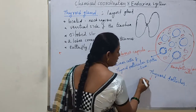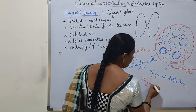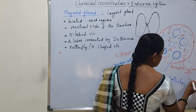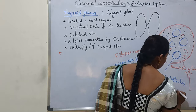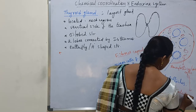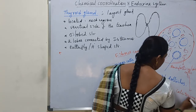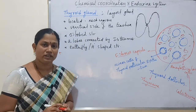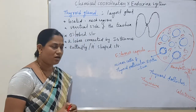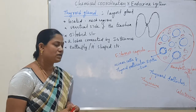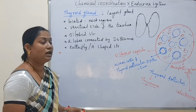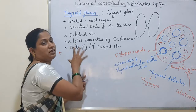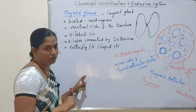The thyroid follicles secrete the thyroxine hormone, while the parafollicular cells secrete the calcitonin hormone. That is why the thyroid gland secretes two hormones.